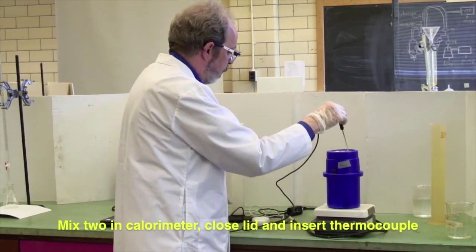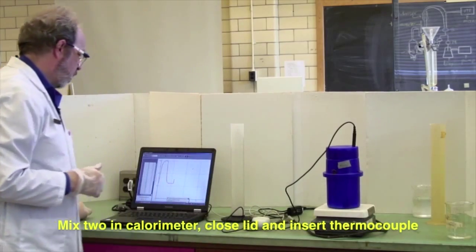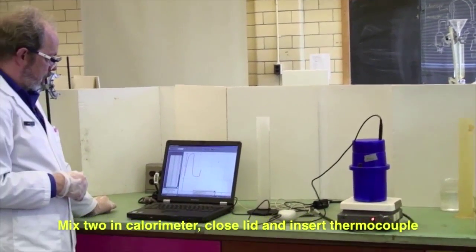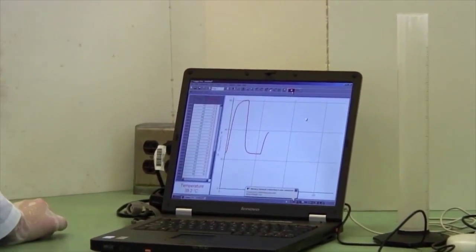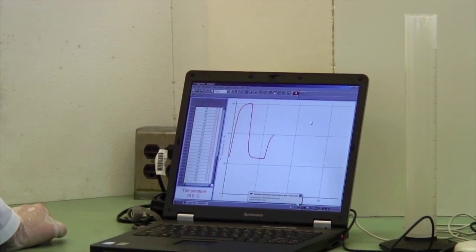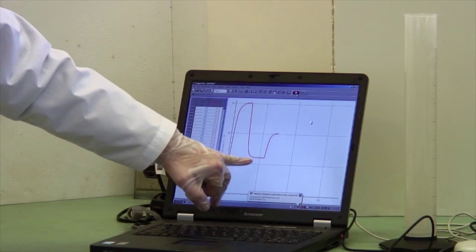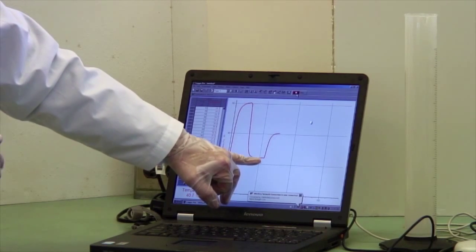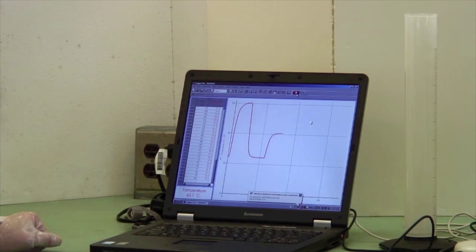Make sure everything has come out. Put the lid on. Put the thermocouple through the hole. And wait until you get a steady temperature. So, here we have the high temperature of the hot water. This temperature down here is the cold water. And we've now got a pretty steady temperature there. It's 40.7. And that is the temperature of the mix.